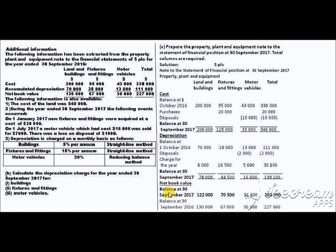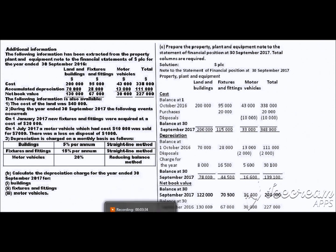Lastly, we state the net book value. The 2016 net book values are taken as given. For 2017: land and building = $200,000 − $78,000 = $122,000; fixtures and fittings = $115,000 − $44,500 = $70,500; motor vehicles = $33,000 − $16,600 = $16,400. These figures complete the property, plant and equipment note to the financial statements.